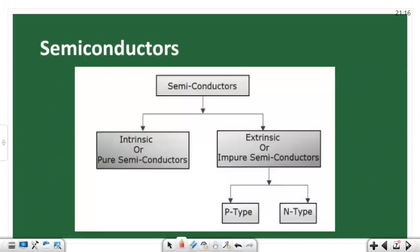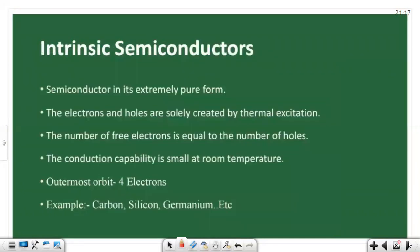The two types of semiconductors are: intrinsic semiconductors, which are pure semiconductors, and extrinsic semiconductors, which are impure semiconductors. Extrinsic semiconductors are further classified into P-type and N-type semiconductors. The intrinsic semiconductor is the purest form of semiconductor.